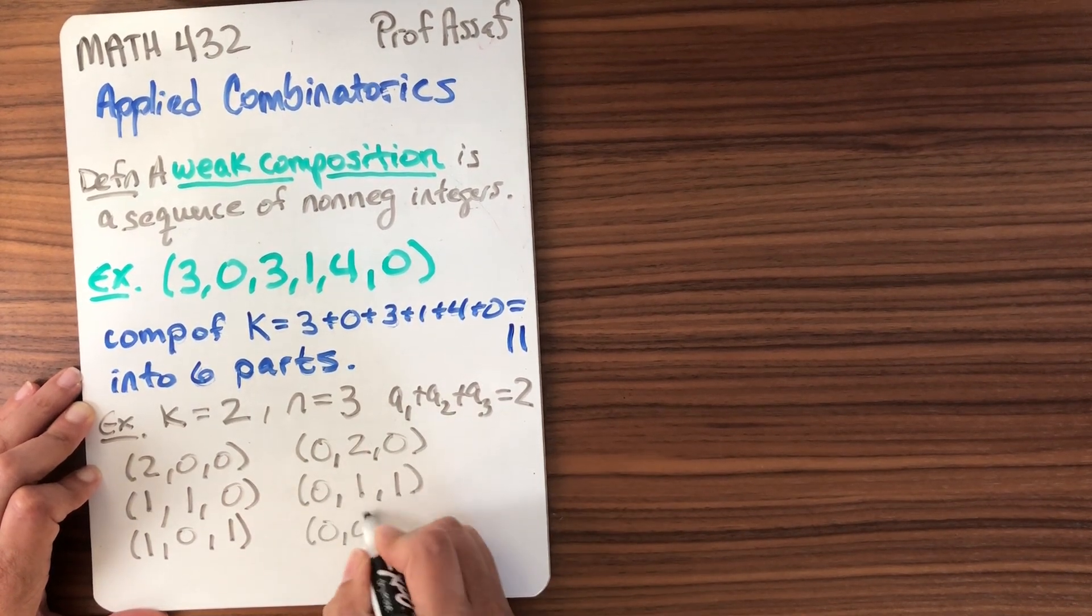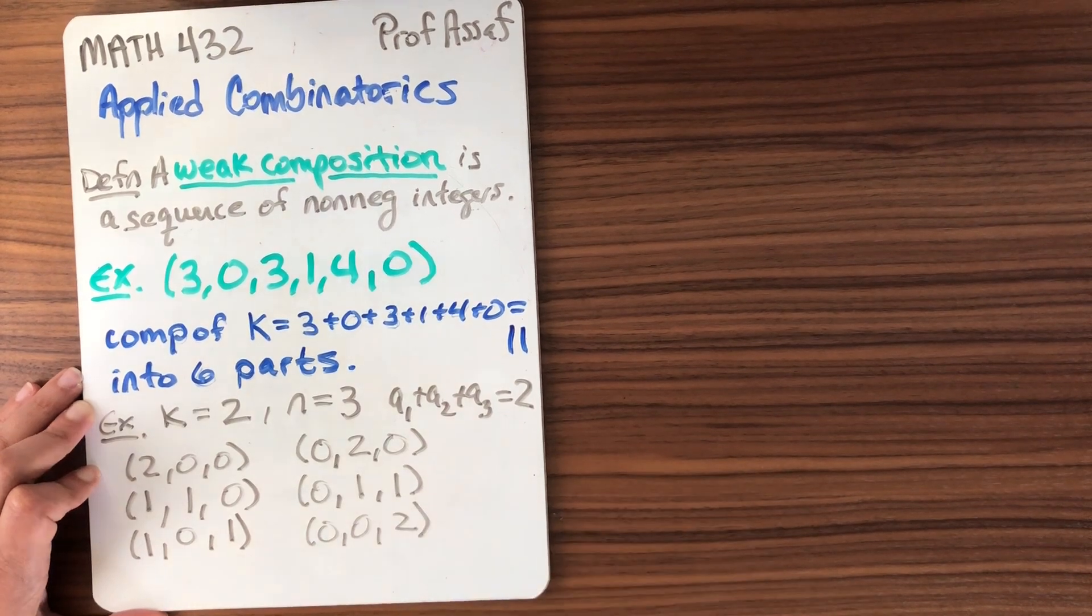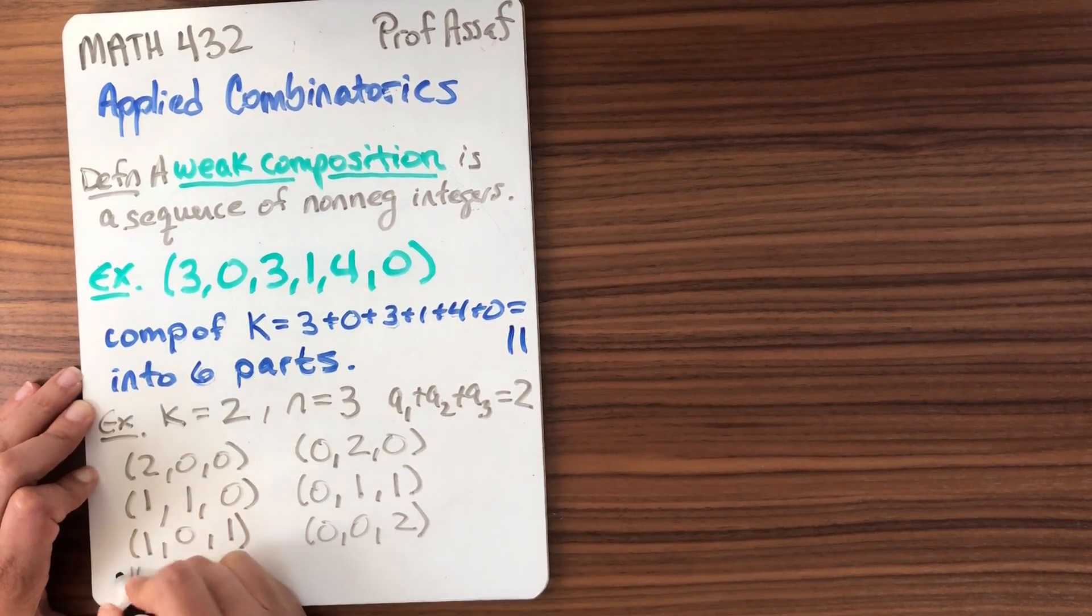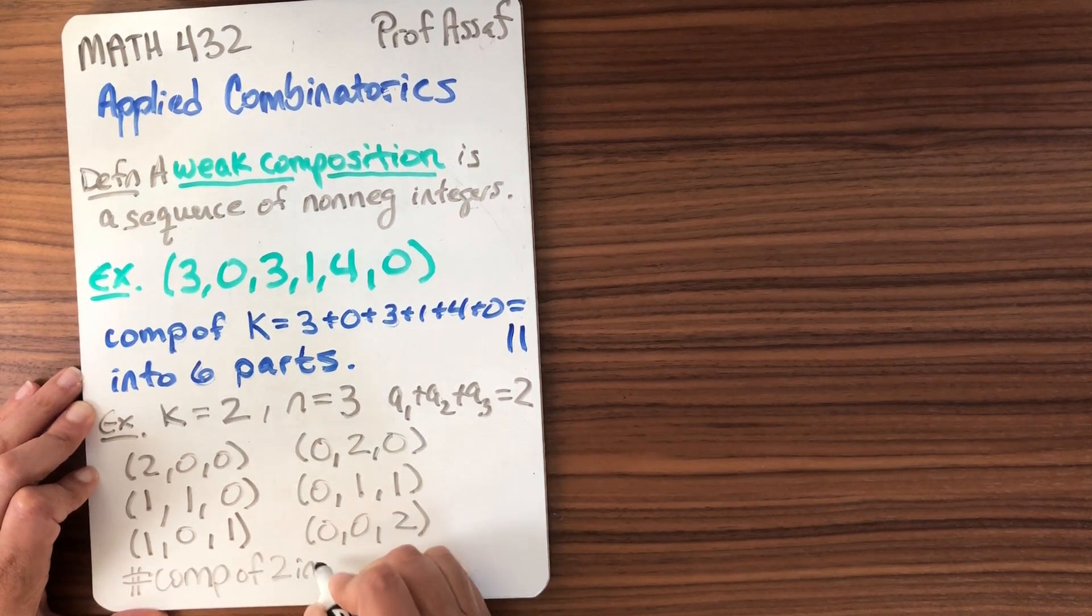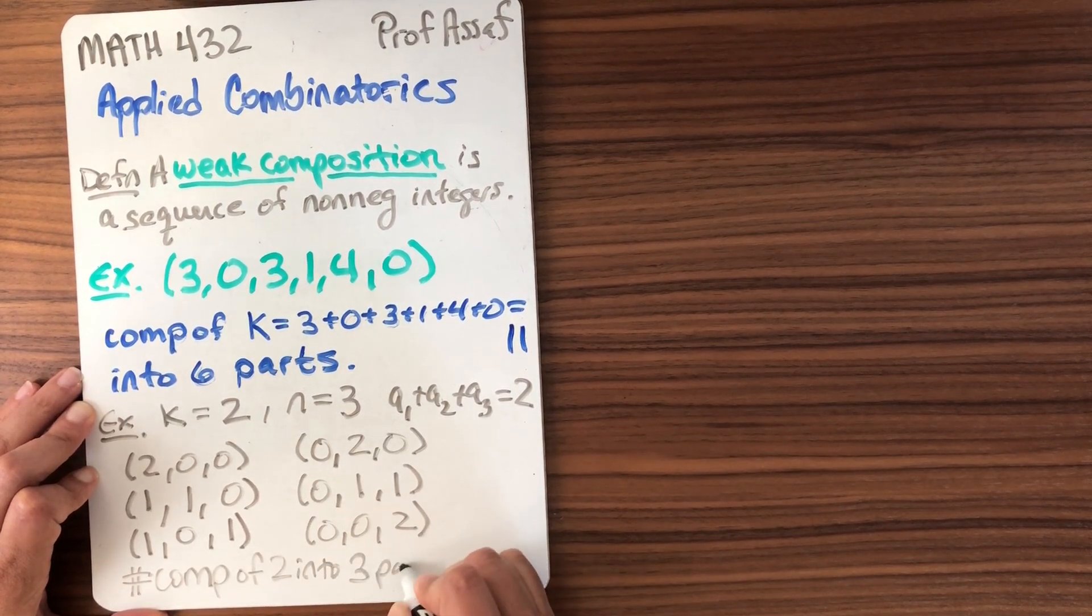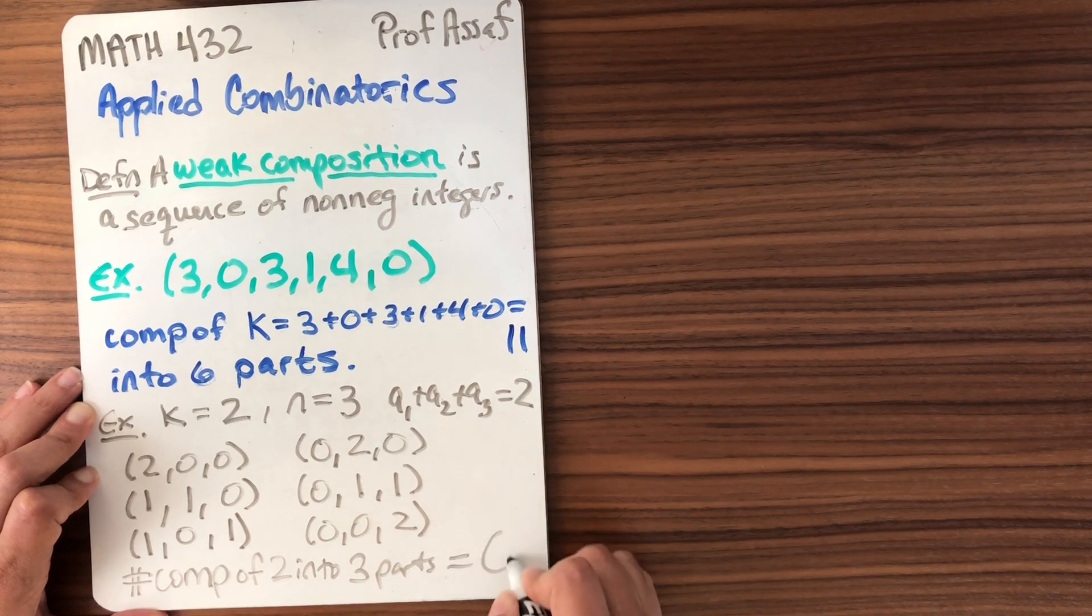Or I could start with two 0s and then have a 2. And that's it. So the number of what we'll say compositions of 2 into 3 parts is equal to 6.